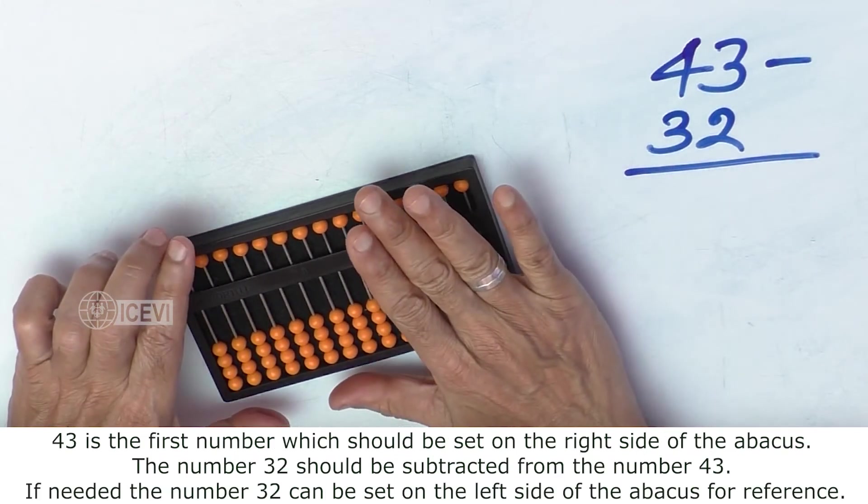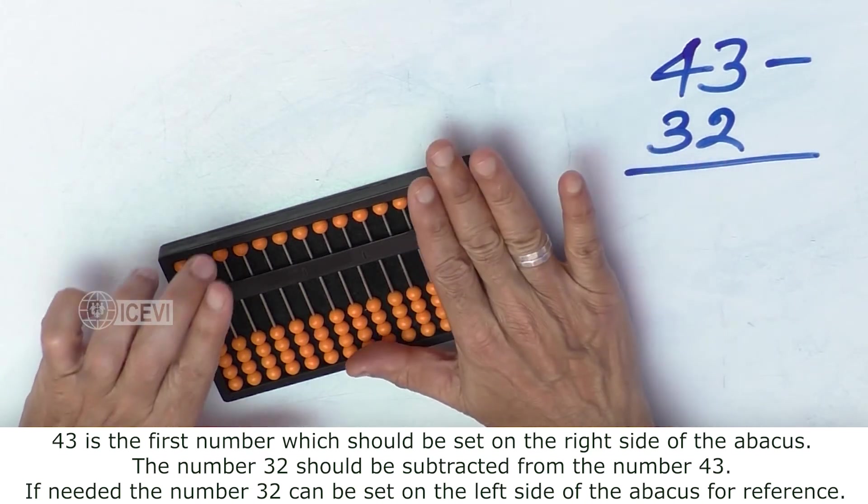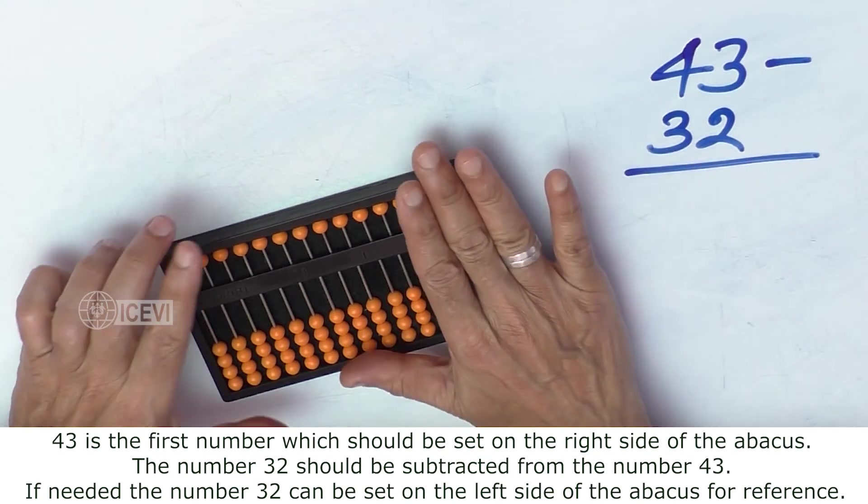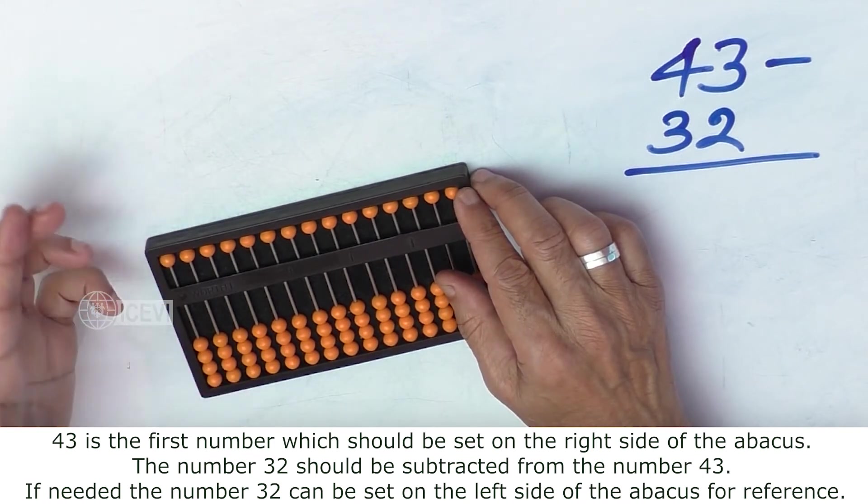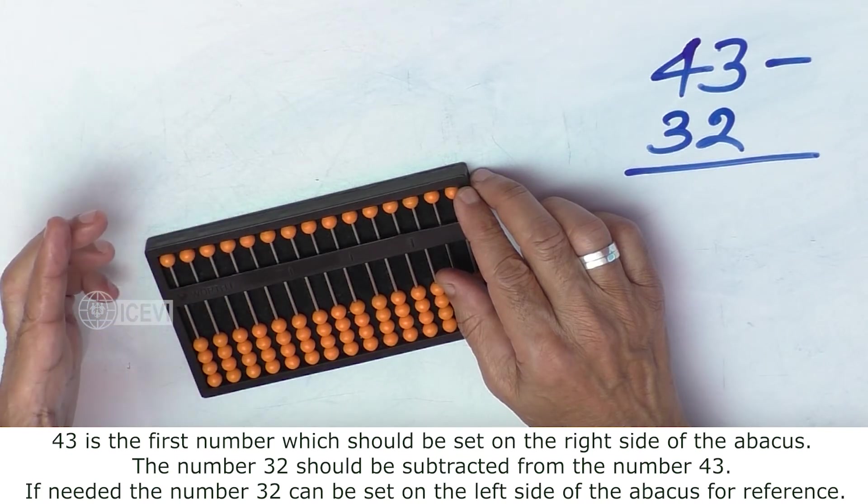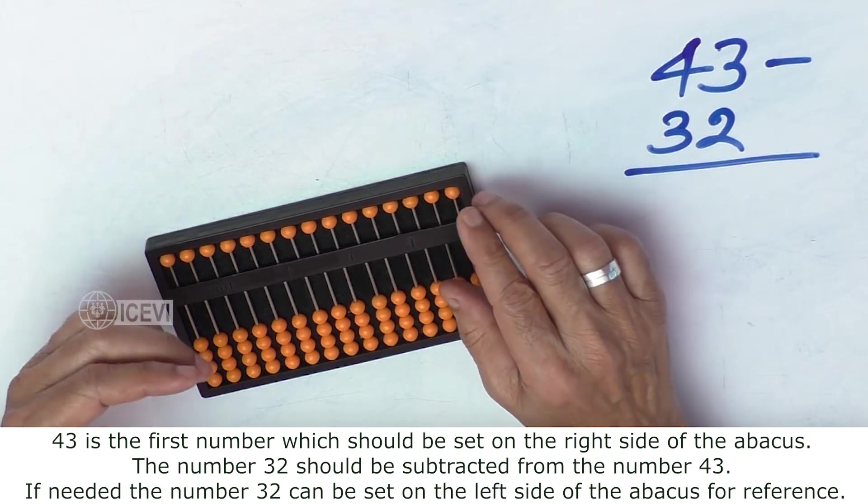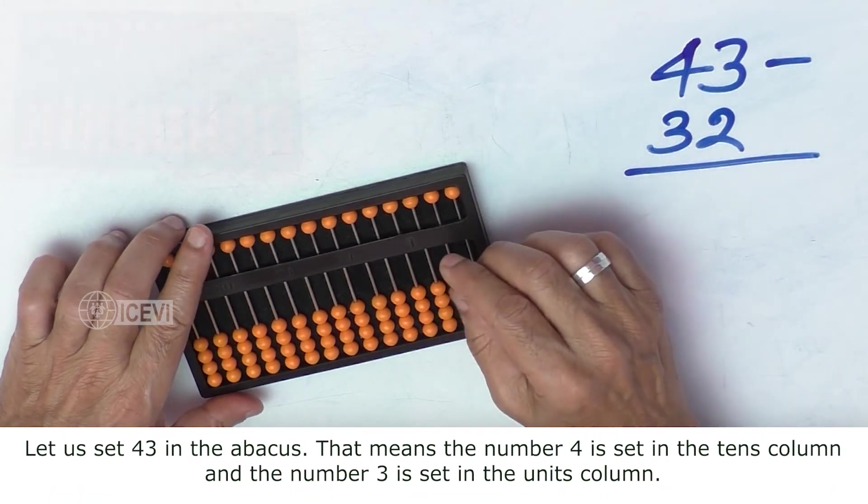43 is the first number which should be set on the right side of the Abacus. The number 32 should be subtracted from the number 43. If needed, the number 32 can be set on the left side of the Abacus for reference. So, let us set 43 in the Abacus.